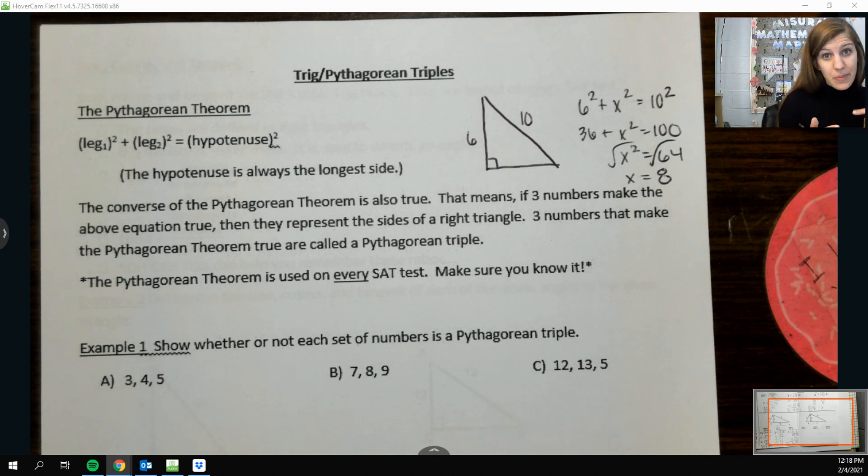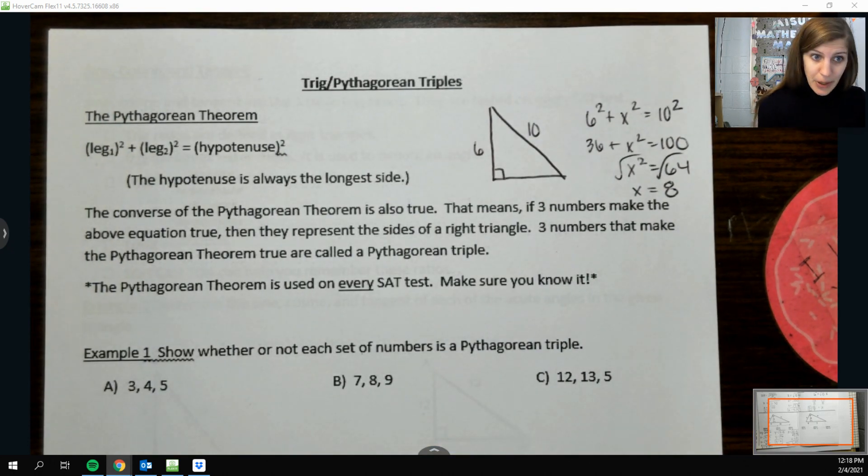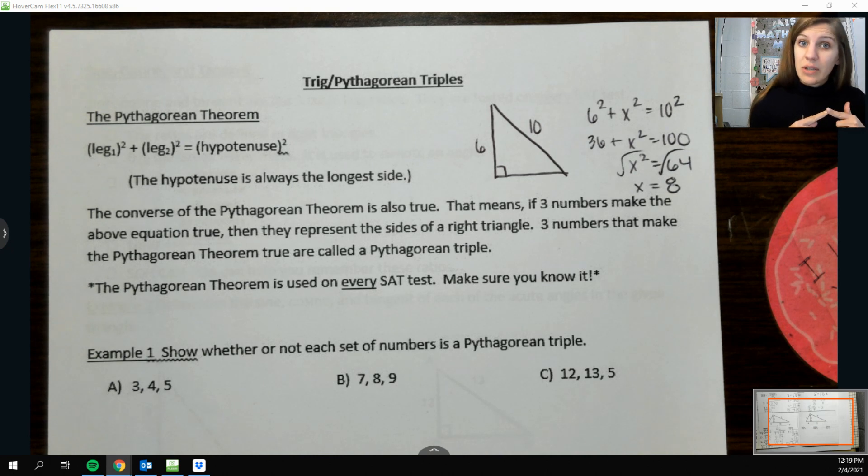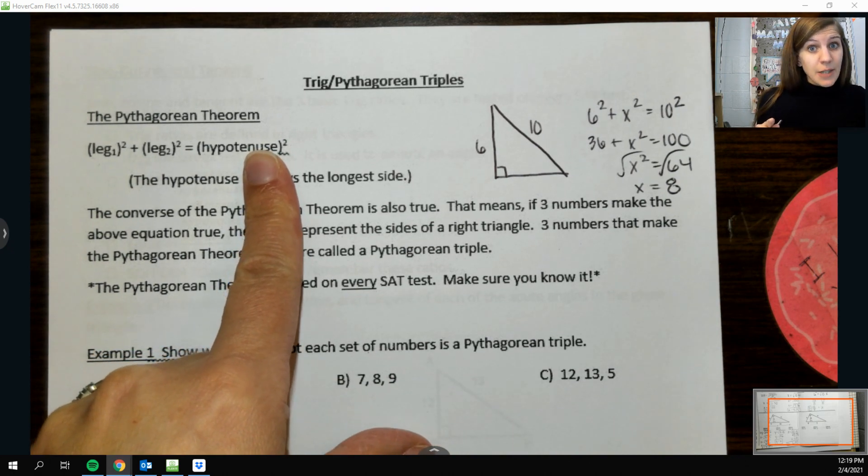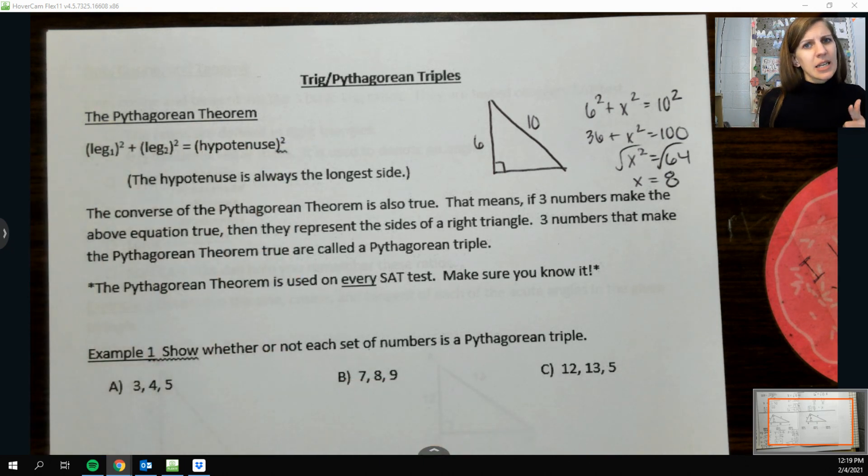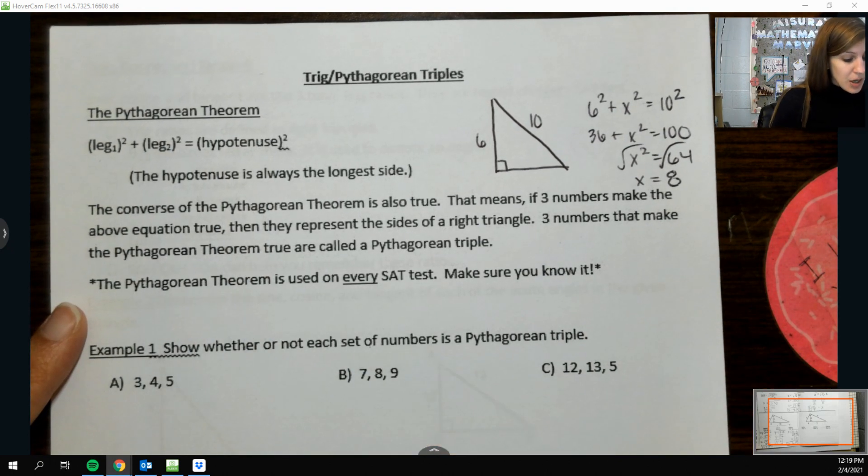Now the converse of the Pythagorean theorem is also true, which says that basically if you are given three numbers, you can see if they make a right triangle by putting them into the Pythagorean theorem. And as long as this side does equal that side, then they are a Pythagorean triple. So if three numbers make the equation true, they represent the sides of a triangle, a right one. Three numbers that make the Pythagorean theorem true are called a Pythagorean triple.